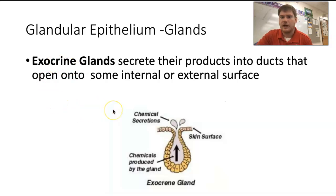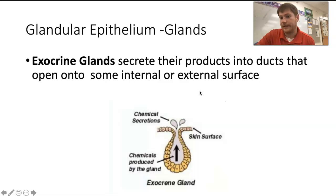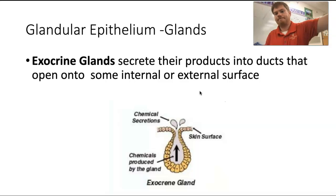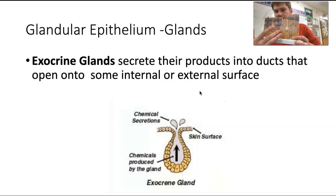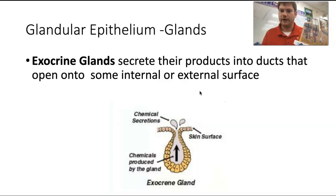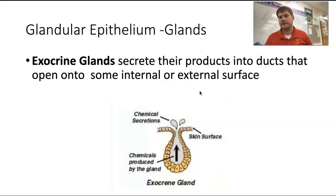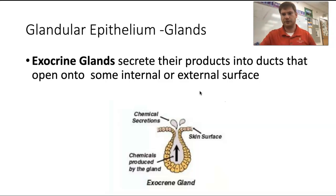Exocrine glands secrete their products into ducts — think of a duct like a tube — that open into some internal or external surface. The biggest example is sweat glands. On this skin model, those little white things are sweat glands, and those little purple things are sebaceous glands, which secrete grease and oil onto your hairs to keep them waterproof and pliable. The pancreas also has exocrine glands that secrete things into your digestive system to help break down food.